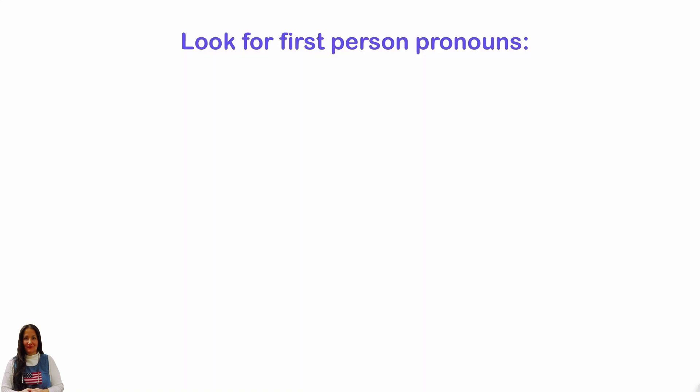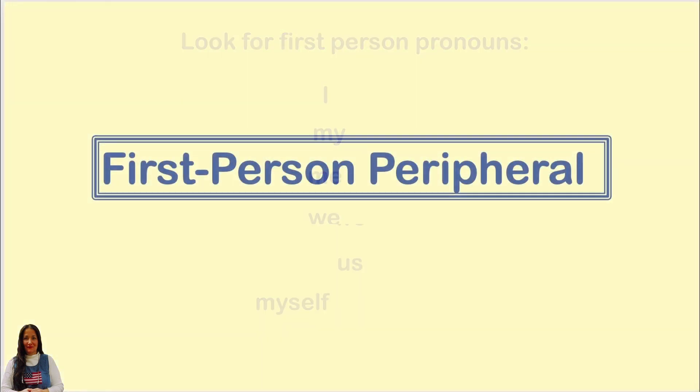Disadvantages of first person point of view: using first person point of view limits the view of other characters, such as the protagonist's motivations. It offers only one perspective. Look for first person pronouns: I, my, me, we, us, myself — these are all referring to the character himself or herself.